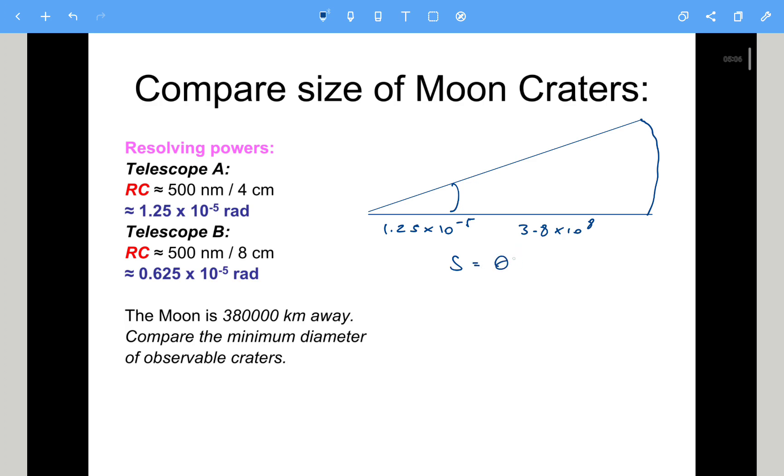So S is theta, angle in radians, times the distance. So the first one, 1.25 times 10 to the minus 5, multiplied by distance, 3.8 times 10 to the 8. That gives us 4,750 meters, or 4.75 kilometers.